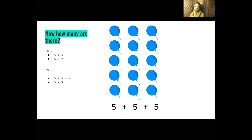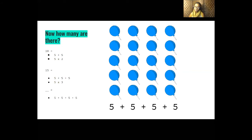Let's add another group of five — now we have four groups of five, with five added one, two, three, four times. That's going to be five times four. We know the first three groups gave us 15 balloons, so let's start at the next number: sixteen, seventeen, eighteen, nineteen, twenty. Our answer for adding five four times, or five times four, is twenty — there's another multiplication fact for your toolbox.